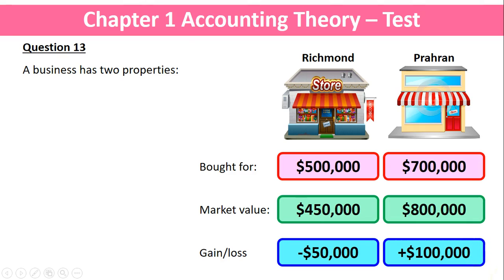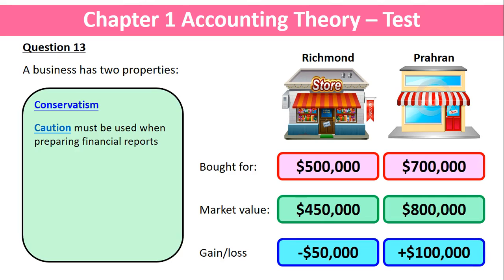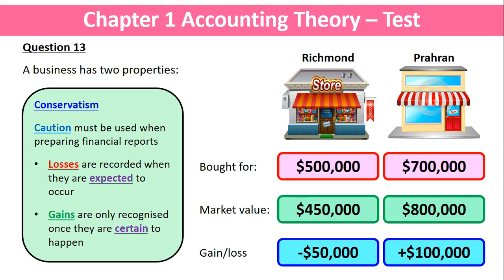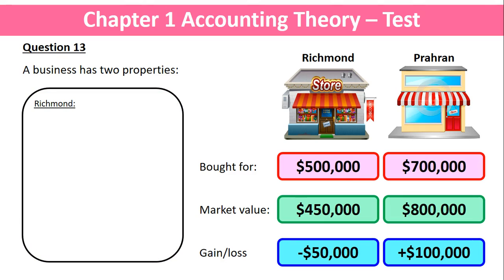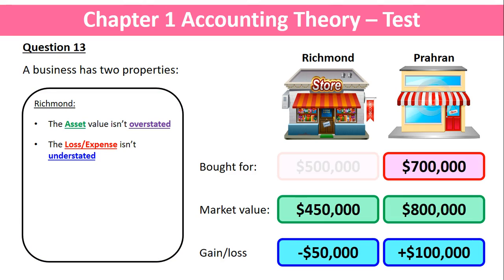Let's get back to the conservatism principle by looking at the definition. It says we must use caution when preparing financial reports by recognising losses when expected and gains only when certain. Based on that, for Richmond we would actually value it at its new market value of $450,000, not the old cost price of $500,000, because we're expecting a loss of $50,000. We do this so the asset value isn't overstated.